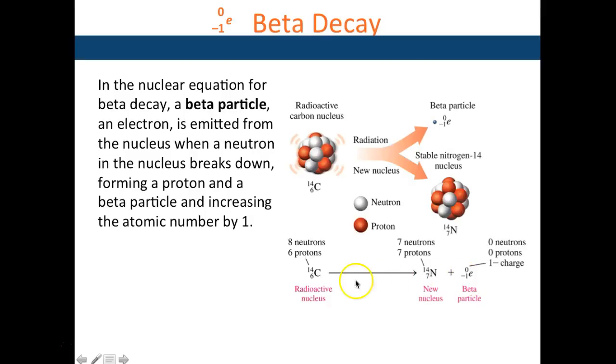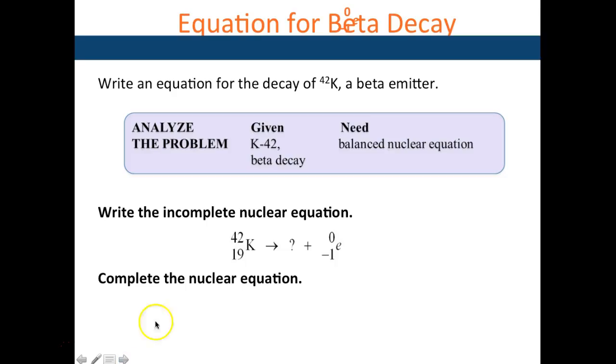Here, potassium undergoing beta decay produces the new element to the right of potassium, which is calcium. So 20 minus 1 equals 19, and the mass is 42. So calcium-42, 20.